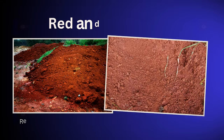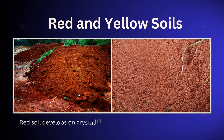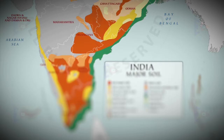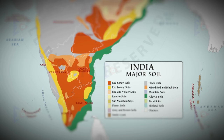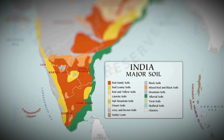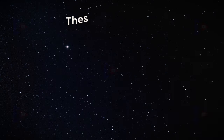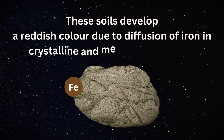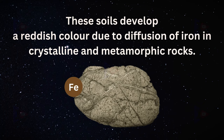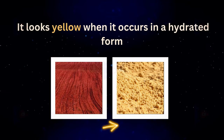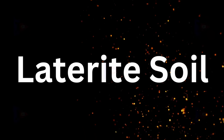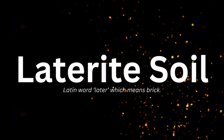Red and yellow soil develops on crystalline igneous rocks in areas of low rainfall in the eastern and southern parts of the Deccan plateau. It is also found in parts of Odisha, Chhattisgarh, southern parts of the middle Ganga plain and along the piedmont zone of the Western Ghats. It develops a reddish color due to diffusion of iron in crystalline and metamorphic rocks and looks yellow when it occurs in hydrated form.